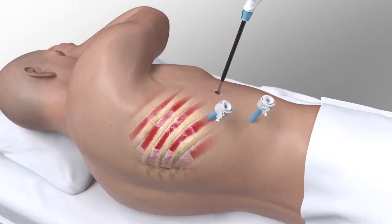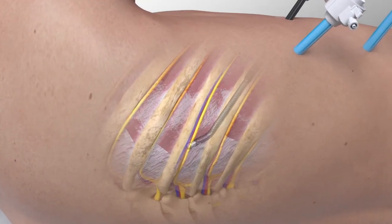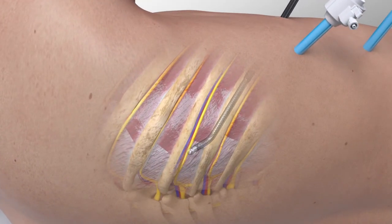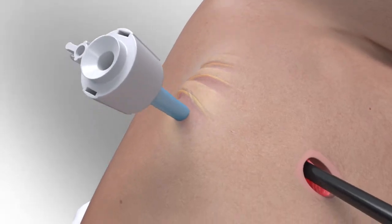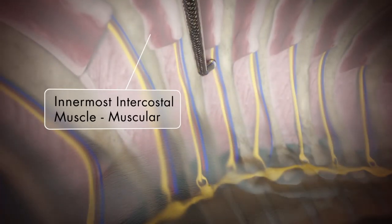Cryo ablations are performed on the intercostal bundle which contains the vein, artery, and nerve. Locate the nerve in the incisional intercostal space, preferably at the margin of the innermost intercostal muscle and the membranous portion of the internal intercostal muscle.